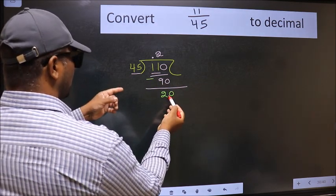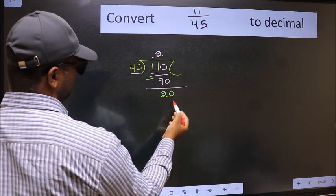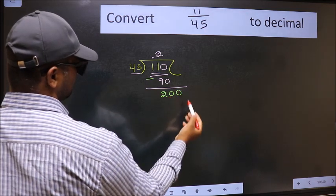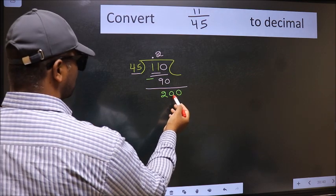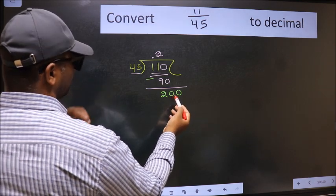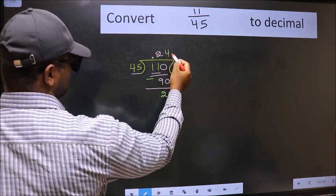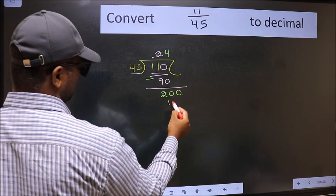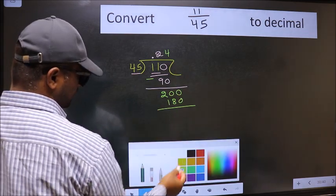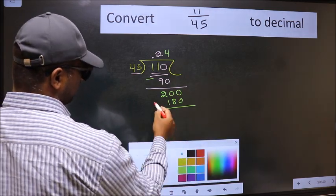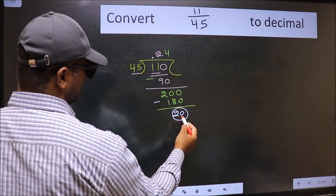20 is smaller than 45, and we already have the decimal. So directly take 0. So, 200. A number close to 200 in the 45 table is 45 times 4, which is 180. Now we should subtract. We get 20 again.